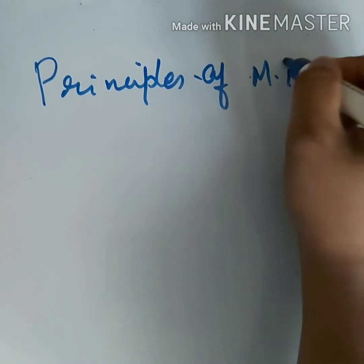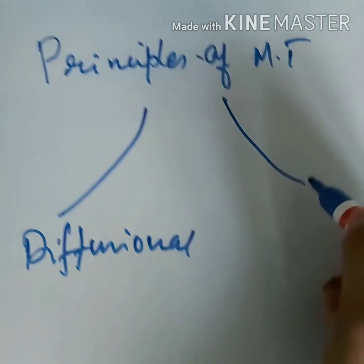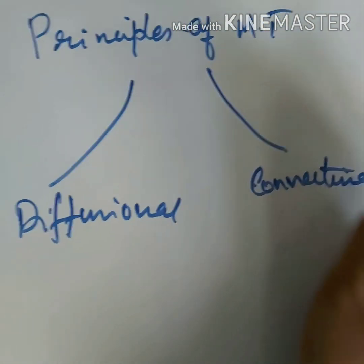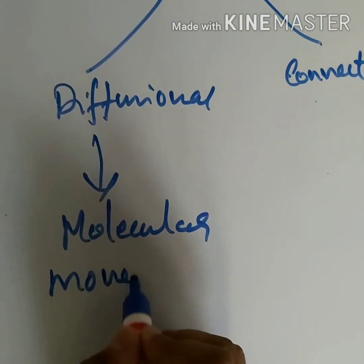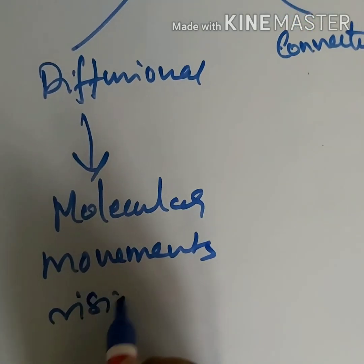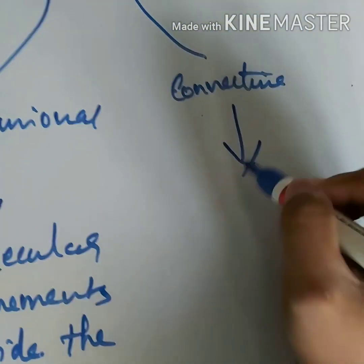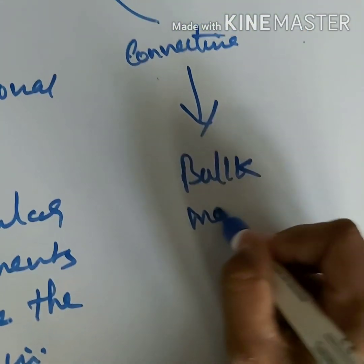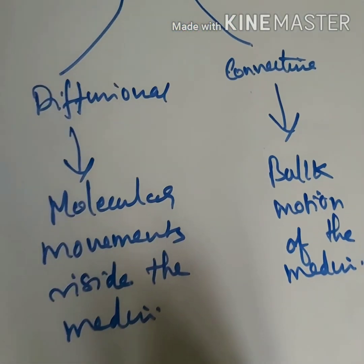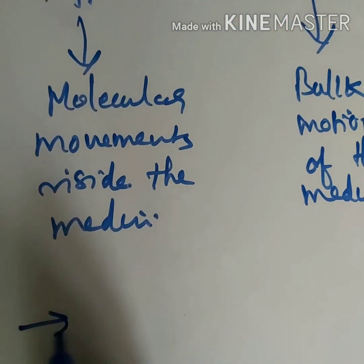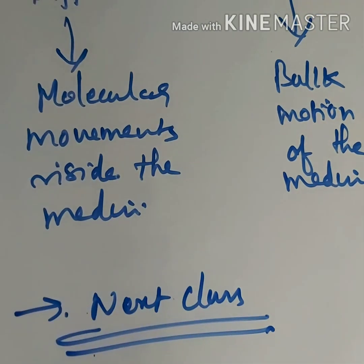The principles of mass transfer are of two types: one is diffusional, and the other is convective. Diffusional means molecular movements inside the medium. Convective means the bulk motion of the medium. That is the difference between these two. We will discuss these topics in the next class.